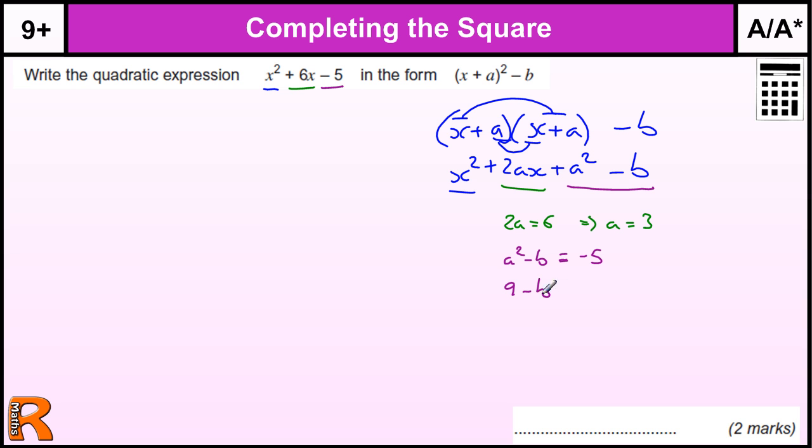So A squared is 9. 9 minus B is minus 5. Take the 9 away from both sides, you get minus 14. Change the sign to make it positive. Now B is going to be plus 14.